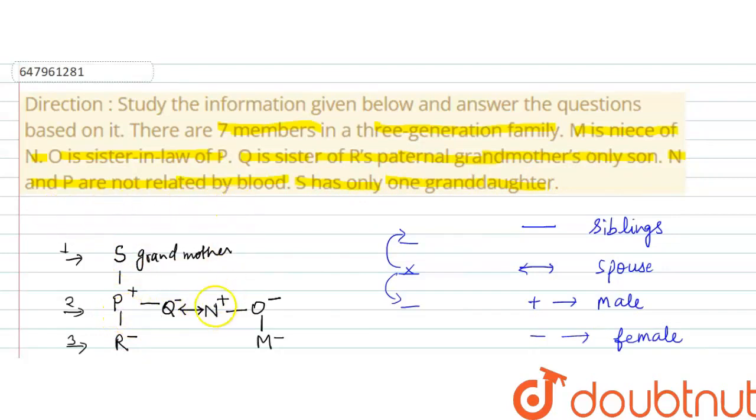N and P are not related by blood. N and P blood related nahi hai, ye in-law ke relation hai. S has only one granddaughter. Yahan par S ka granddaughter only R hai.